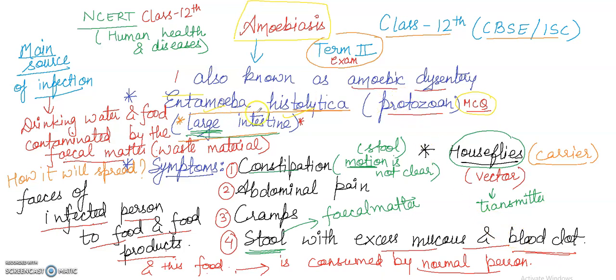Focus on these key points: causative agent, vector, location in the large intestine. This content is taken from the NCERT book and is very important for competitive exams as well as CBSE board examinations. Be aware of all types of MCQ questions. This topic is from term 2, and it is easy to score full marks in the term 2 examination.